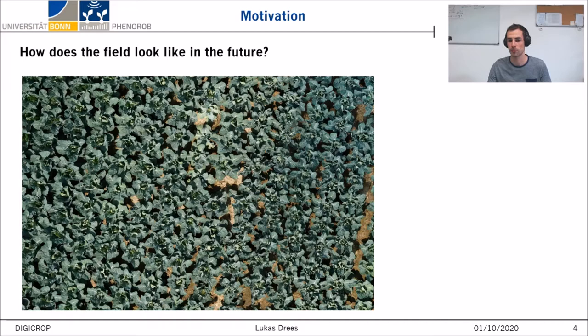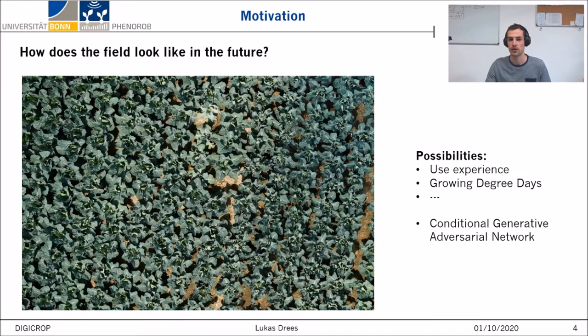But the question is: how do you come to this knowledge? One possibility would be to rely on your long experience as a farmer. Another possibility is to consider external factors like the number of sunshine hours and rain amount. Our idea is to generate the future growth state of each plant in the field based only on images and the use of machine learning.